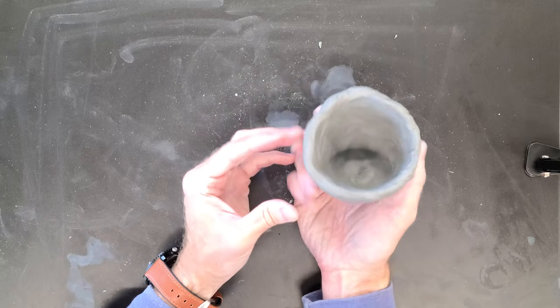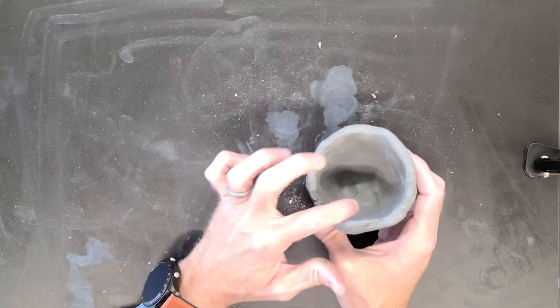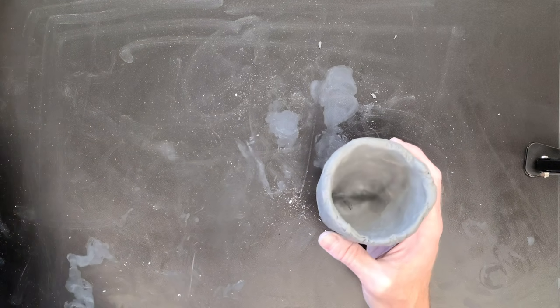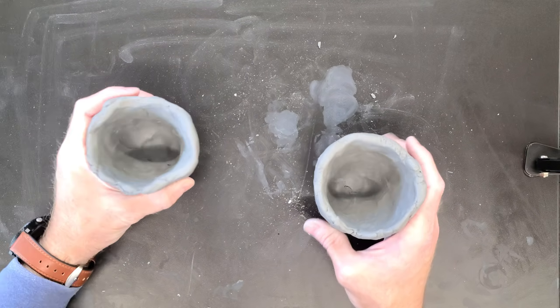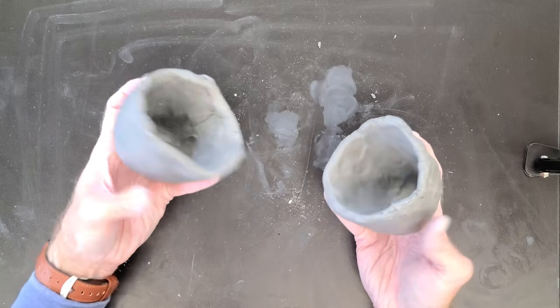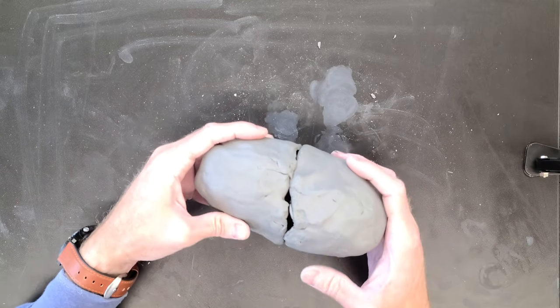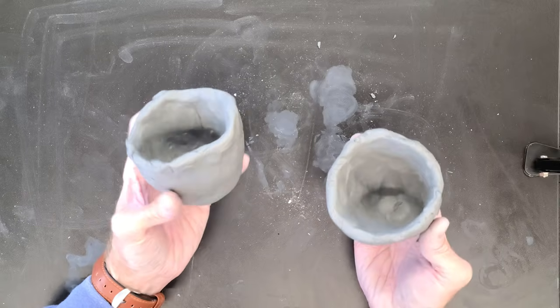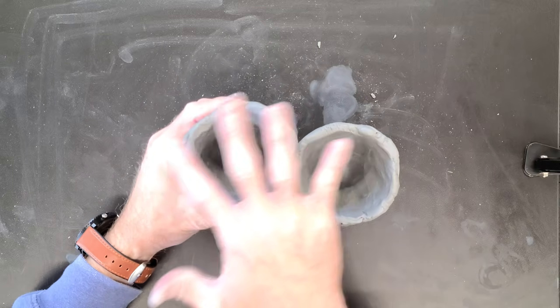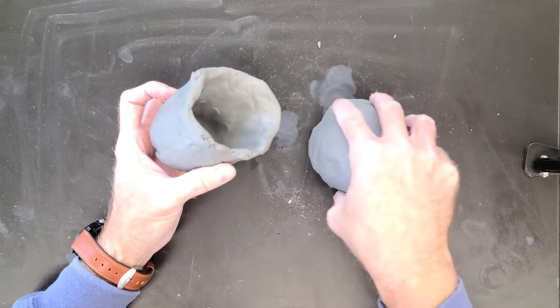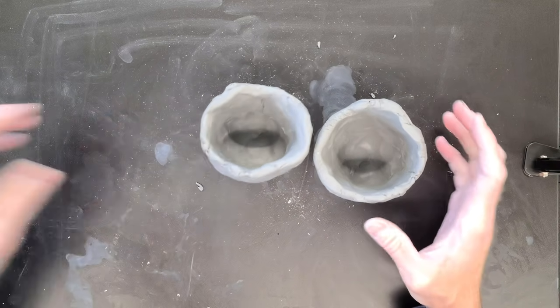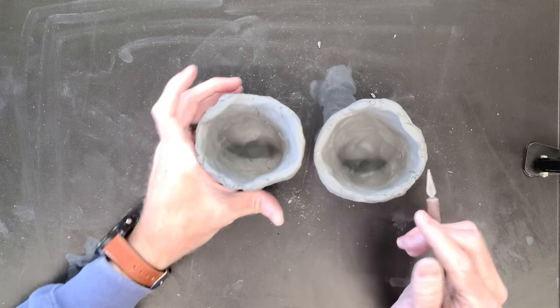Now if I want to have an enclosed body, I'm going to actually take two pinch pots and connect them together. There's a couple of ways you can make it so this is even. You can tap like I was doing before, or I'm actually going to take my knife tool and remove a little bit of material.